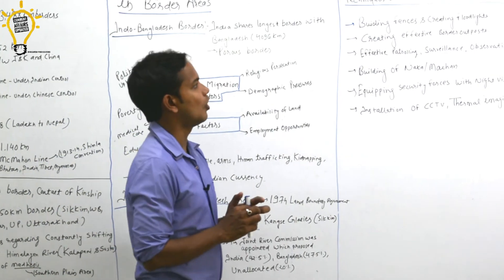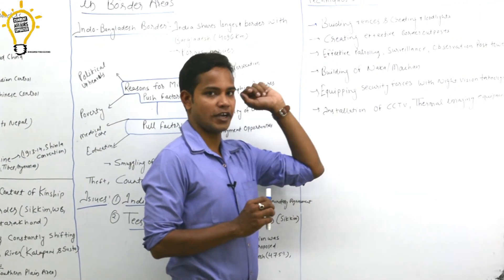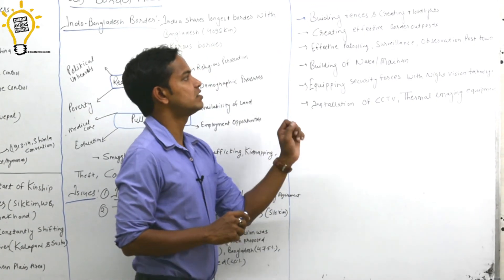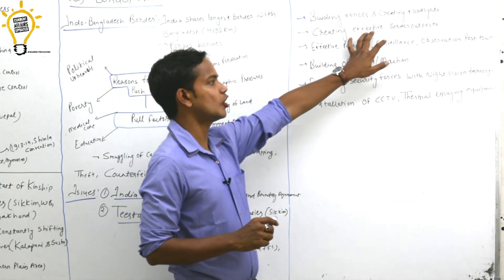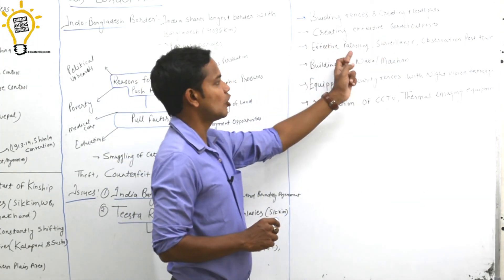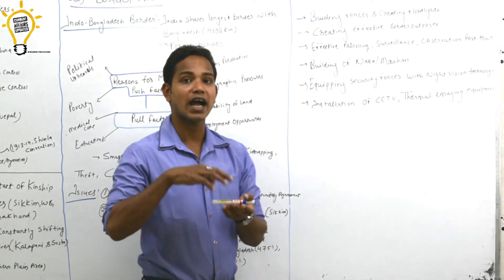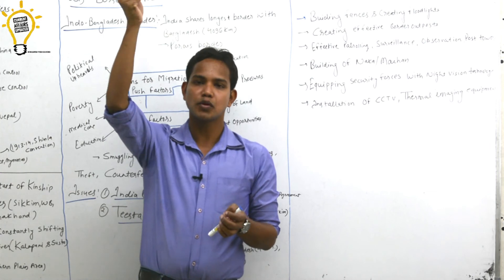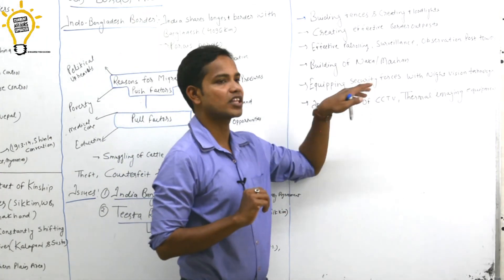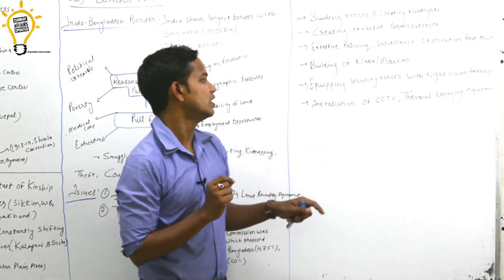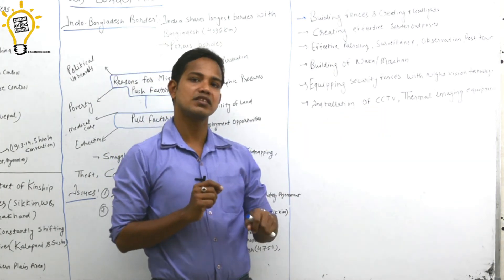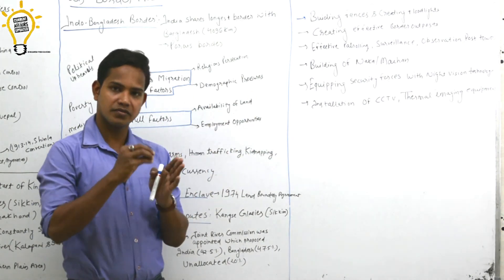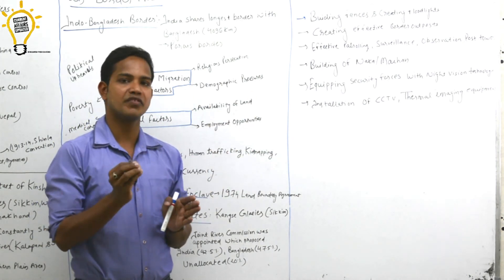Another question asked is what are the techniques of effective border management? Border management is made effective by building watch towers, sitting on top of them for surveillance, equipping security forces with better night vision technology, installing CCTV cameras, using thermal imaging equipment. These basic questions will be asked about what are the challenges with borders and which security forces guard them.